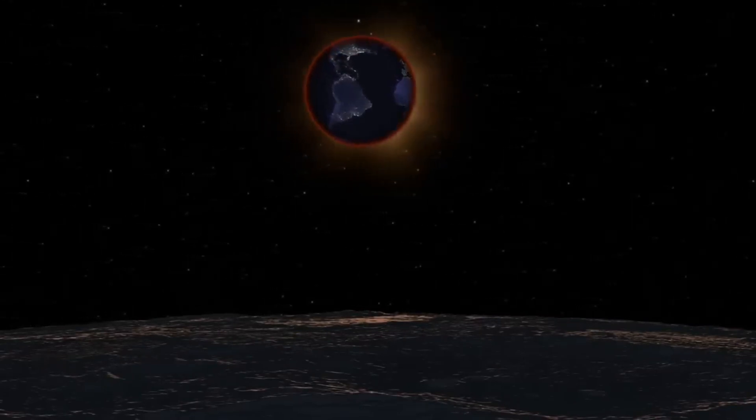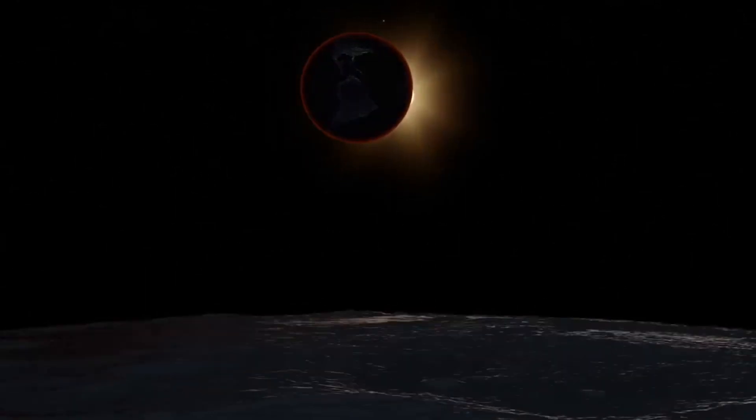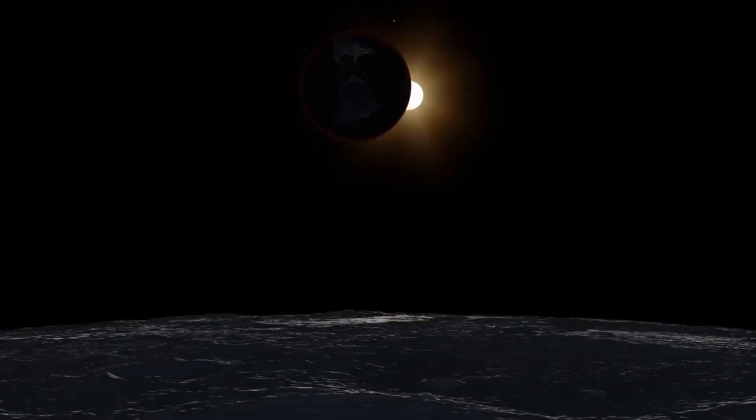Using pure geometry, Aryabhata was able to predict the timings of eclipses with astonishing accuracy, long before telescopes or modern computers were invented.